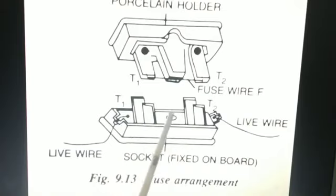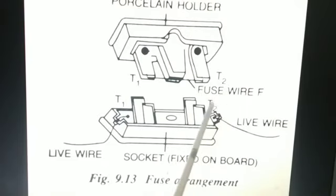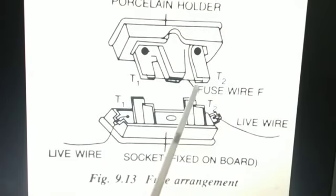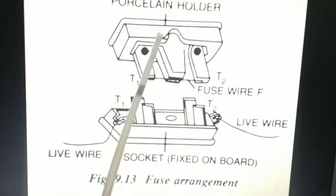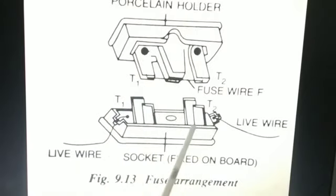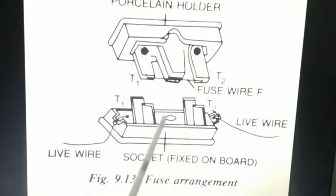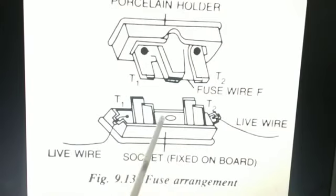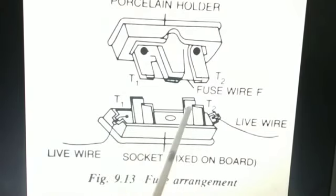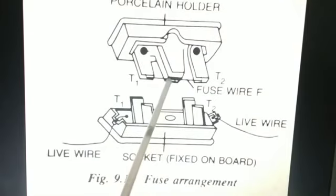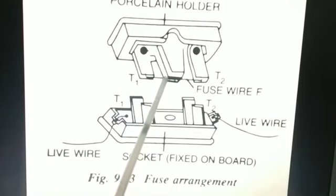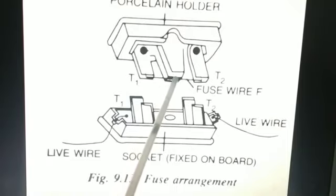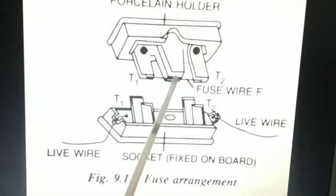When the circuit is complete, the appliances will work. Suppose there are some problems in the electric circuit — like overflow of current, voltage fluctuations, or short circuiting in the circuit.